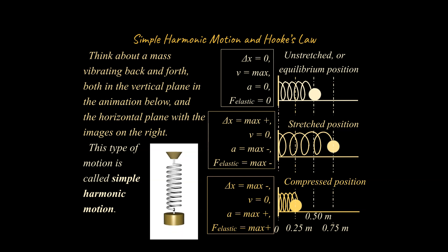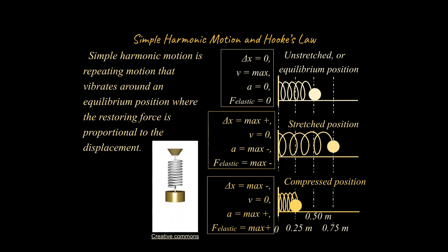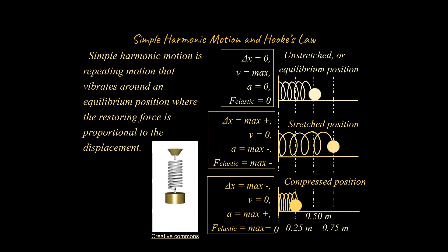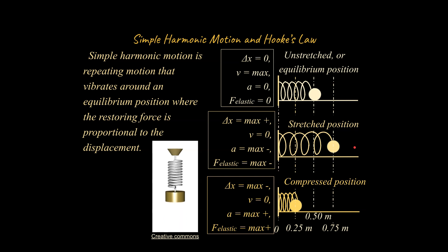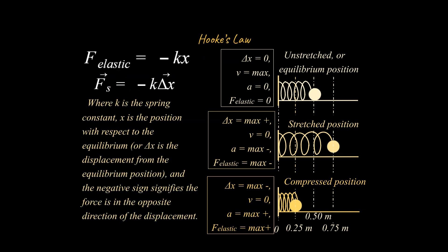The official definition: simple harmonic motion is repeating motion that vibrates around an equilibrium position where the restoring force is proportional to the displacement. That means if you stretch it some Δx and get a restoring force F, then if you stretch it twice as much — two Δx — the restoring force would be twice as great. If that proportional relationship holds, then you're dealing with simple harmonic motion.